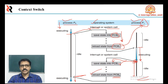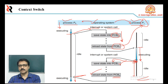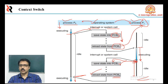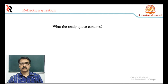Switching from P0 to P1 and P1 to P0 — meaning the processor allocates to P0 and then after some time to P1 — is called context switching. This is just a two-process example; there are many processes in a real system. Switching from one process to another, allocating the processor to P0, P1, P2, P3, and so on, is called context switching. Context switching time is pure overhead because the system does no useful work while switching. The switching speed depends on memory speed, the number of registers that must be copied, and the existence of special instructions. Context switch times are highly dependent on hardware support.